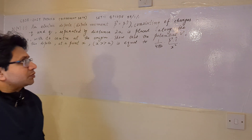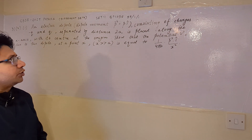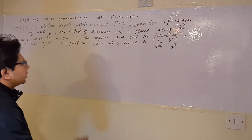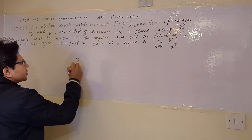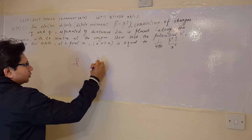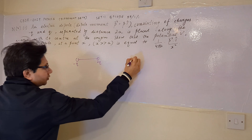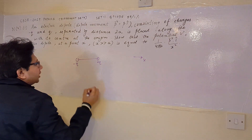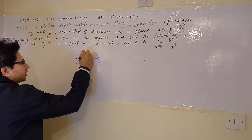This problem is based on the topic of electric potential due to an electric dipole. The dipole consists of two charges, minus q and plus q. This dipole is placed along the positive x-axis and the distance of the dipole is given as 2a.